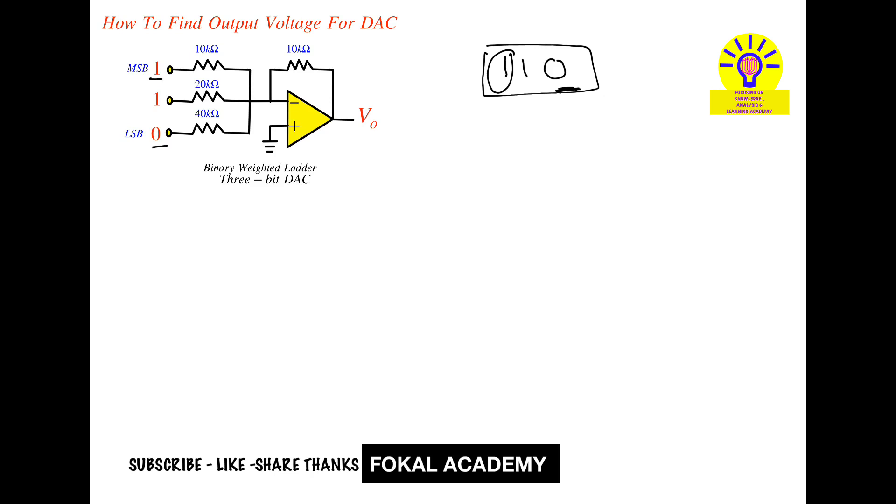So let's consider that this is V1 voltage and this is V2 voltage and this is V3 voltage. The corresponding resistors are input resistors. So this is R1 resistor, this is R2 resistor, and this is R3 resistor. The output resistor is called the feedback resistor, so let's consider it is RF.